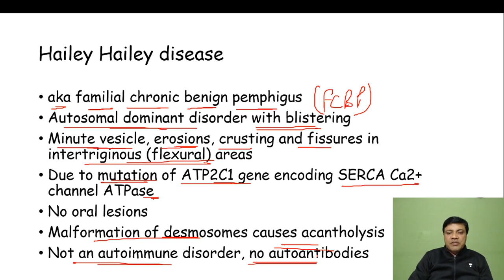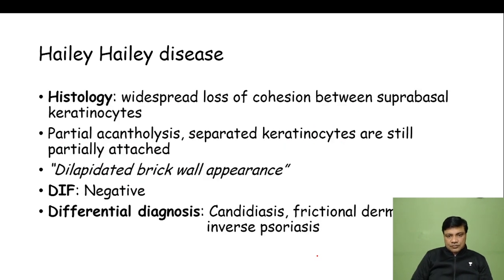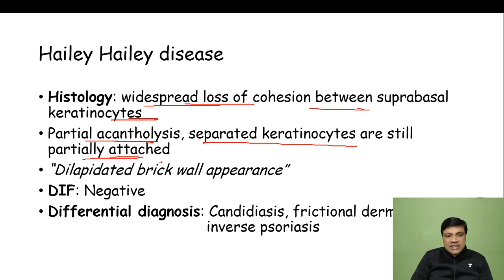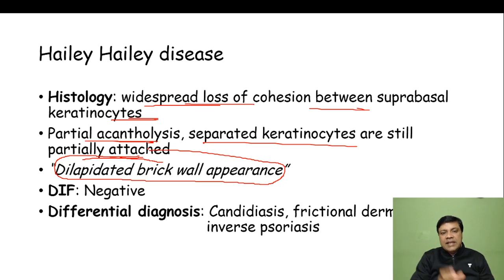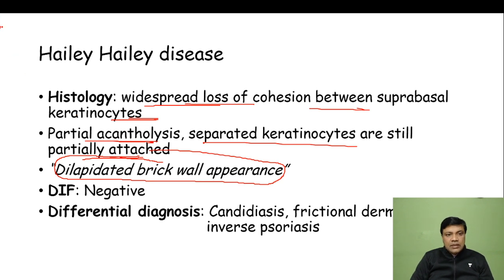Histology of Haley-Haley disease shows widespread loss of cohesion between suprabasal keratinocytes with partial acantholysis — separated keratinocytes are still partially attached — giving rise to the dilapidated brick wall appearance. Since it is not an autoimmune disorder, DIF will always be negative in Haley-Haley disease.